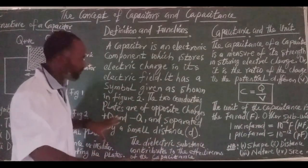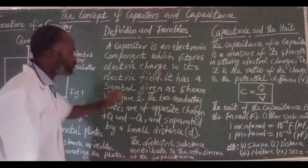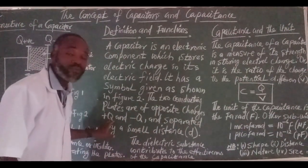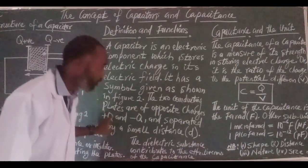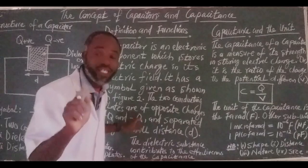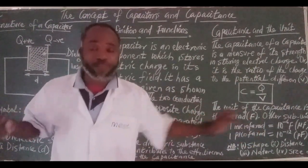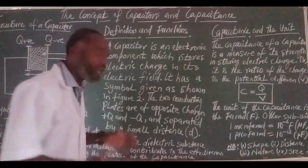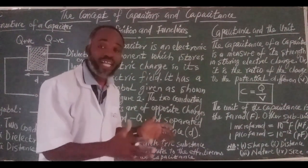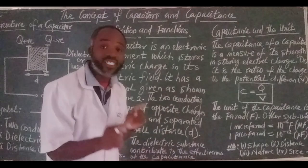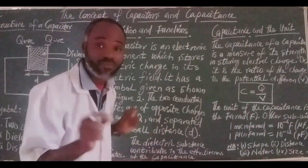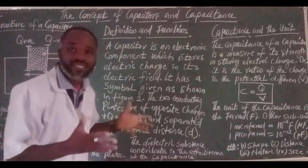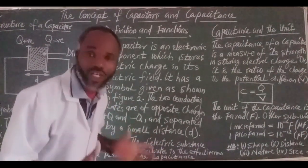And what happens? It has a symbol. Two conducting plates are of opposite charges: Q positive and negative charge respectively, separated by a certain amount of distance D, as I earlier said. If we have understood up to that point, we should also take into consideration what I said about the dielectric substance. The dielectric substance increases the capacitance of a capacitor.